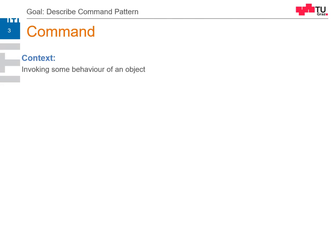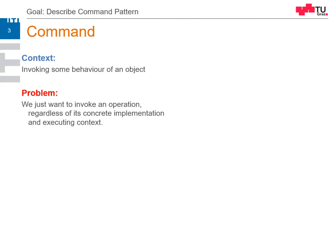The context is: we invoke some behavior of an object — just invoking. The problem is we want to invoke this operation regardless of where it's running and regardless of the executing context. It should be self-contained. The force here is that we want to decouple the invoker and the context of the request. Everyone could create a context, set it to the command, and then the command should run there independently of the invoker — independently of who created the command.